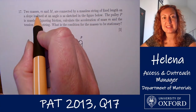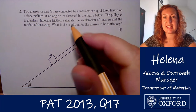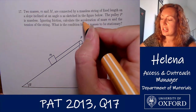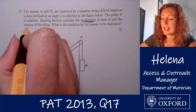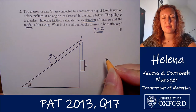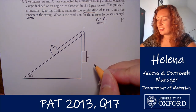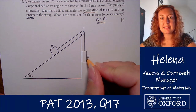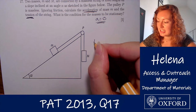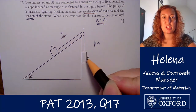In this question we have two masses, lowercase m and uppercase M, which are connected by a massless string of a fixed length on a slope inclined at an angle alpha as sketched in this diagram here. The pulley P is massless and we're told we can't ignore friction. We can assume that uppercase M is greater than lowercase m, and therefore M will accelerate vertically downwards while m will accelerate up the slope. They will have the same magnitude of acceleration because of the way they're joined through the string.